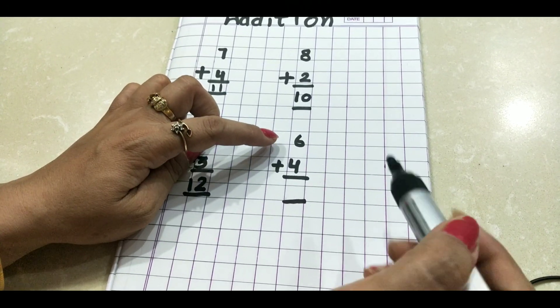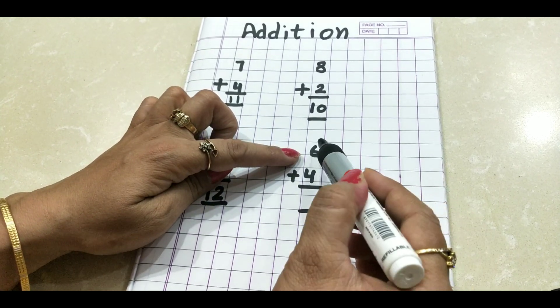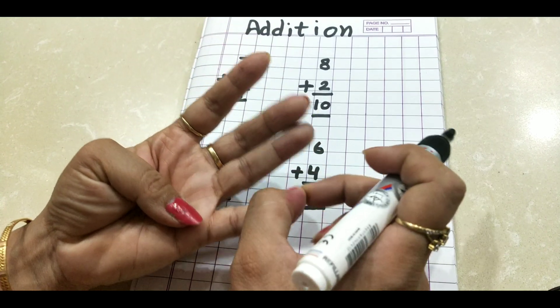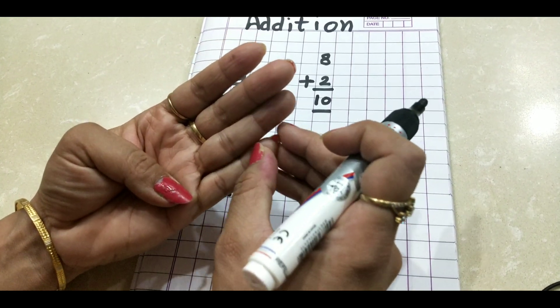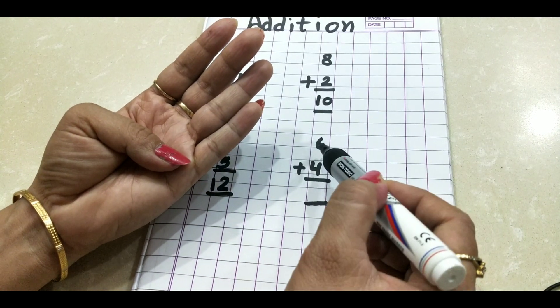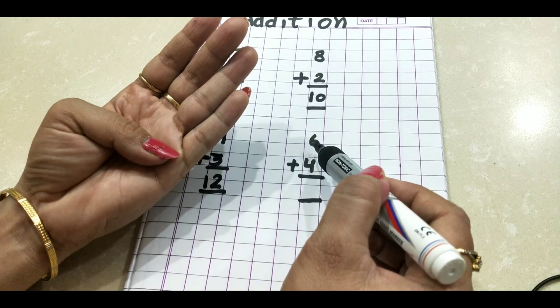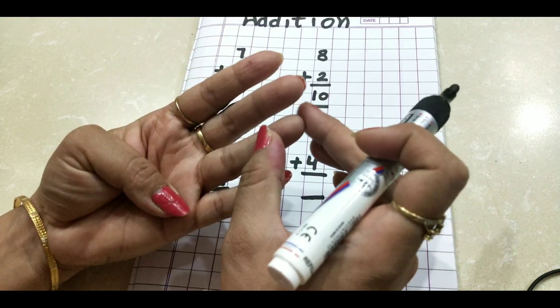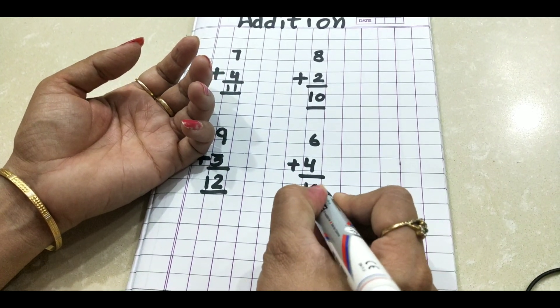Let's do one more question. 6 plus 4. Now, we'll keep 6 in our mind and 4 on our fingers. 1, 2, 3, 4. Where is 4? 4 is on our fingers. And where is 6? 6 is in our mind. What comes after 6? 7. We'll start counting by 7. 7, 8, 9, 10. What is the answer? 10.